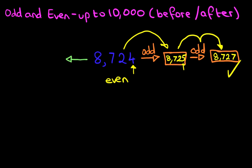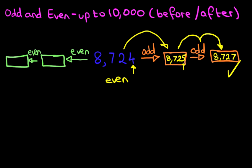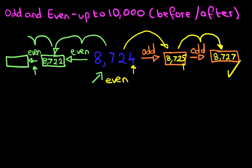The second part of this question is that we have to work out the two even numbers before this number. So if you get this in an exam, what is the even number before this number? This is how you work it out. Well, we know that this number is even. If this number is even, the even number before it is found by counting back in 2's. So counting back in 2's, this number becomes 8,722. We've counted back by 2. And now we do the same again — we count back in 2's — so now we have 8,720. So we have worked out the two even numbers before this number.